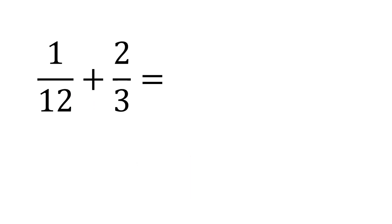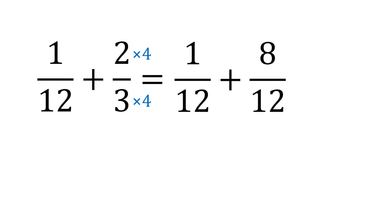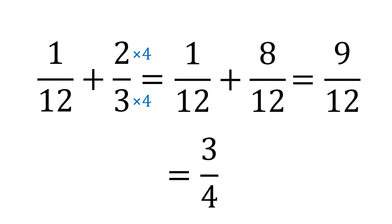Here's a similar example: one twelfth add two thirds. Looking at those denominators, three goes into twelve four times. So we multiply the top of two thirds by four to create an equivalent fraction. This becomes one twelfth add eight twelfths, which is nine twelfths. You can then simplify, since top and bottom are both multiples of three, giving three quarters.